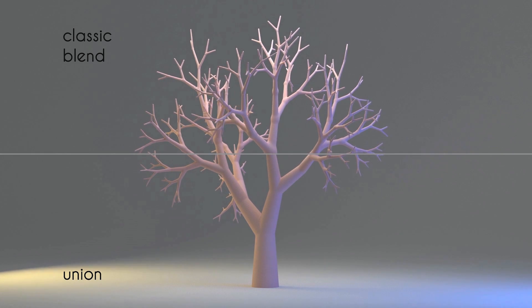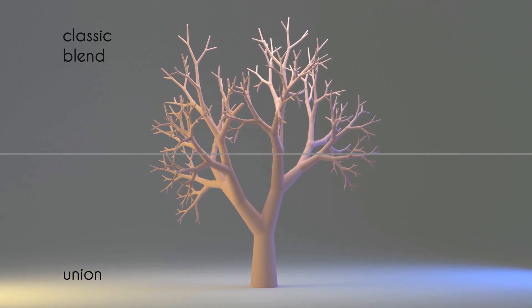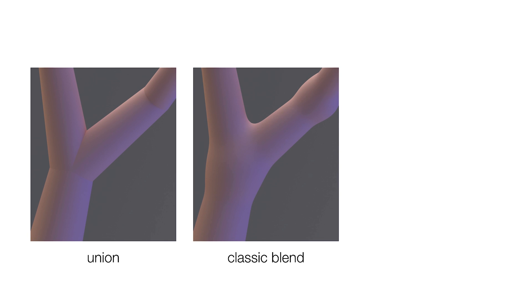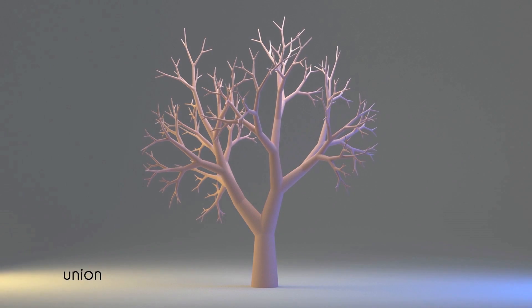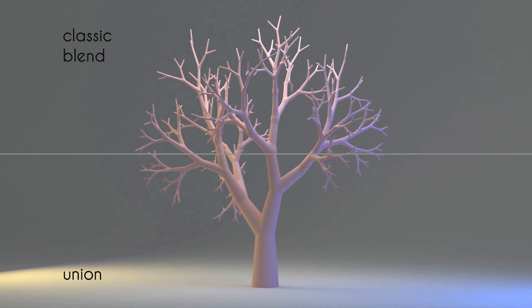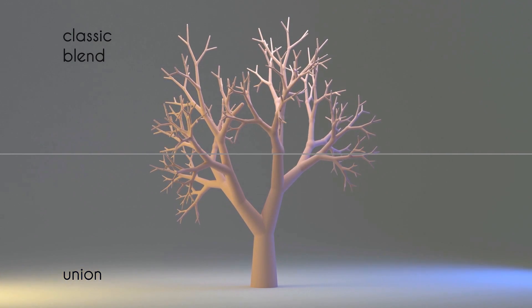Here is a typical procedurally generated tree model, where union is used to shape the branch junctions. Using a classic blend operator gives unrealistic bulging. The user can easily replace this by smooth junctions via a simple sketch. The smoothing operator is automatically applied to all the 500 branches of the tree.